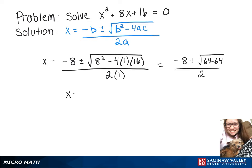Then we have x equals negative 8 plus or minus the square root of 0 over 2, which of course the square root of 0 is just 0, so we have negative 8 plus or minus 0 over 2.